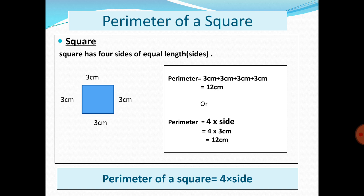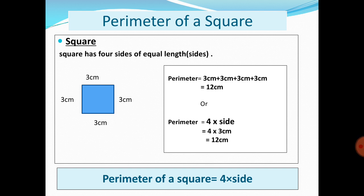Now let's start with perimeter and area of a square. A square has four sides which are equal in length. In this slide you can see a square with equal sides of 3 centimeters. Since perimeter equals the sum of all sides, we add them to get 12 centimeters. We can also use the formula: Perimeter = 4 × side, so 4 × 3 cm = 12 cm.